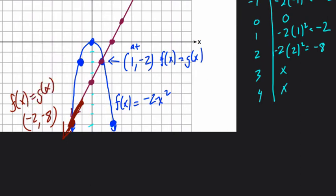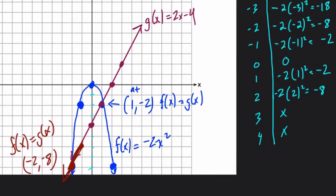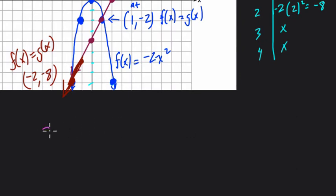Now, if this approach doesn't work, you can easily set this up on a graphing calculator to see where they intersect. You can also solve it algebraically. Let's do that. So if you want to know when they meet, 2x minus 4 equals negative 2x squared, set them equal to each other and solve for x.